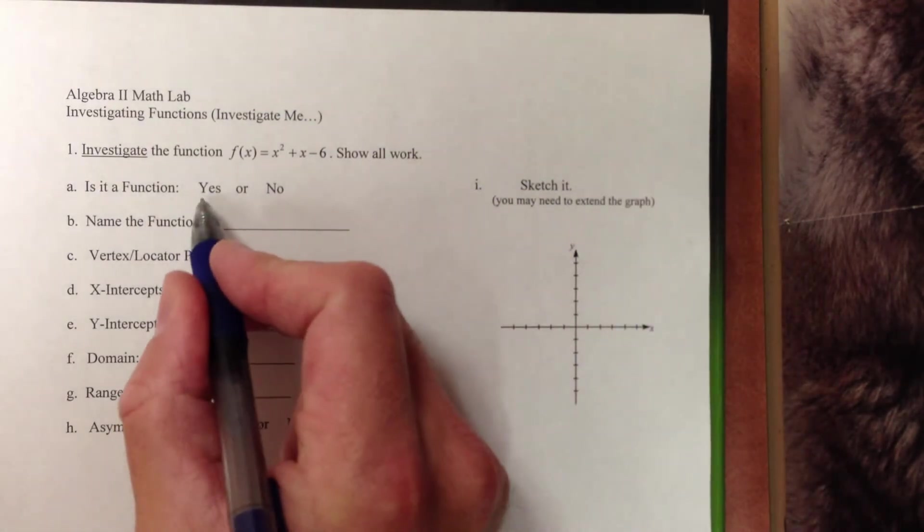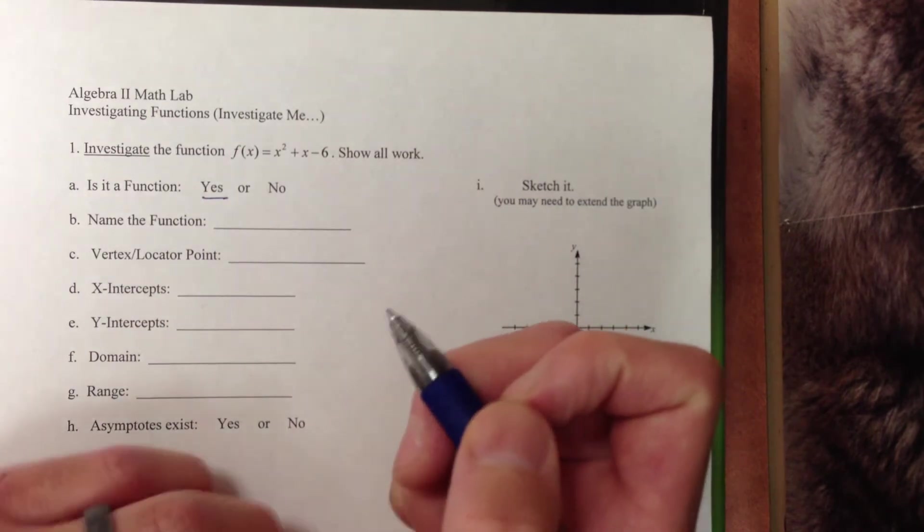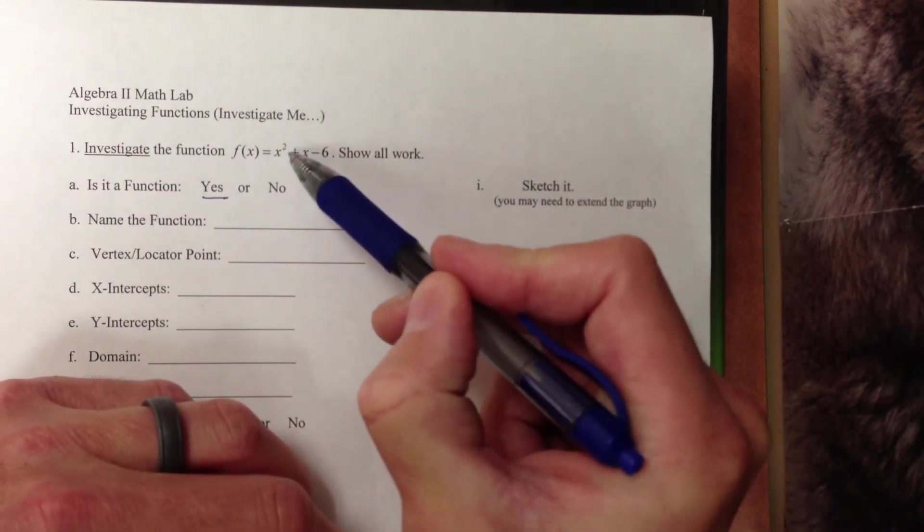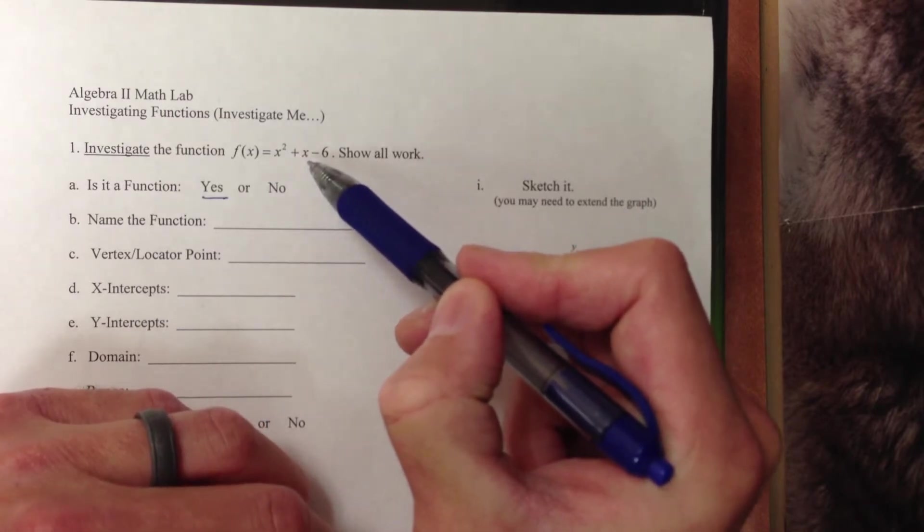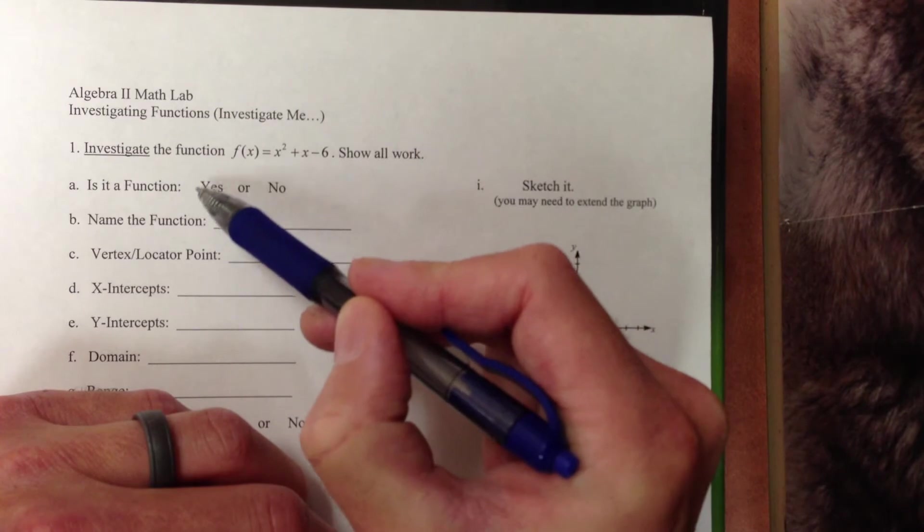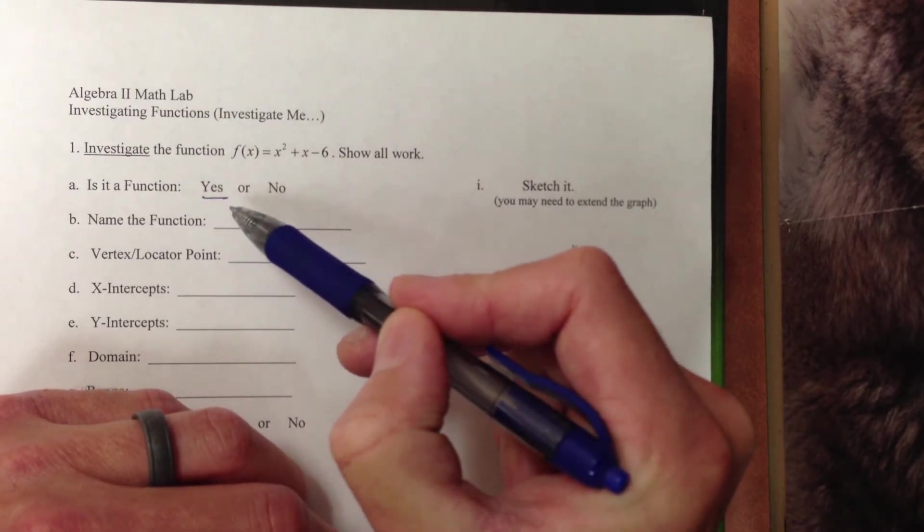First of all, is it a function? Well, I can tell you that yes, it is a function. I can look at my exponents here. My highest exponent is squared. I do not have any fractional exponents. I do not have any negative exponents. So we can actually come back to this and take a look and do a vertical line test once we see the graph of it a little bit later.